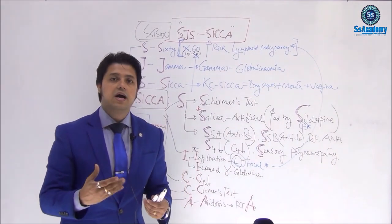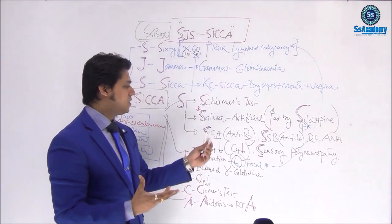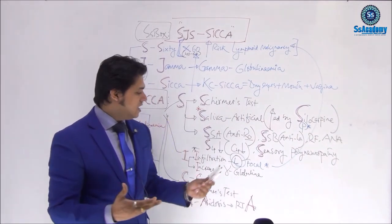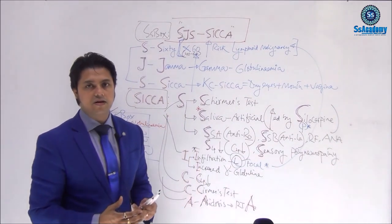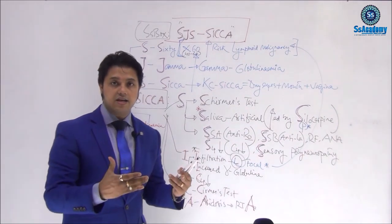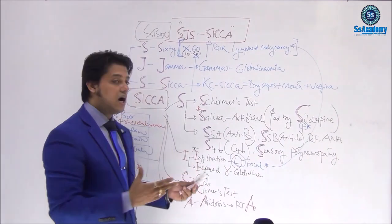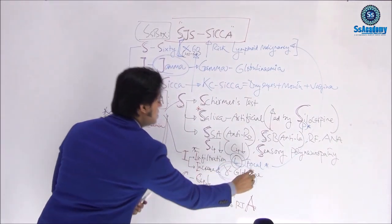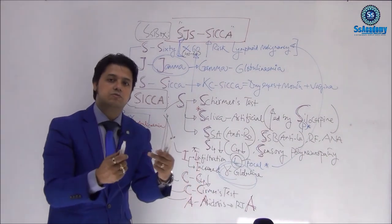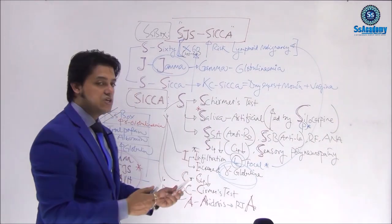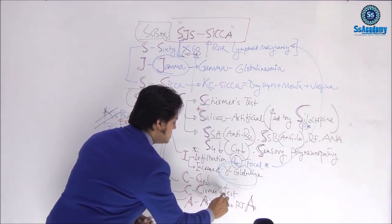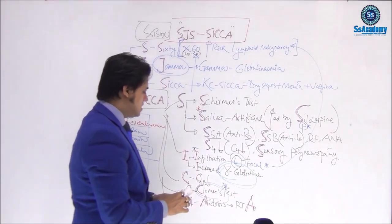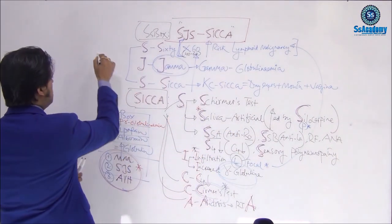Continuing with CICA: S for saliva — artificial saliva and pilocarpine. Investigations include SSA antibody, SSB antibody, and C4 is reduced. Sensory polyneuropathy is also a feature. I for infiltration — focal lymphocyte infiltration in exocrine glands — which can lead to lymphoid malignancy. I for increased gamma globulinemia and C4 Schirmer's test. A for acidosis — renal tubular acidosis (RTA).